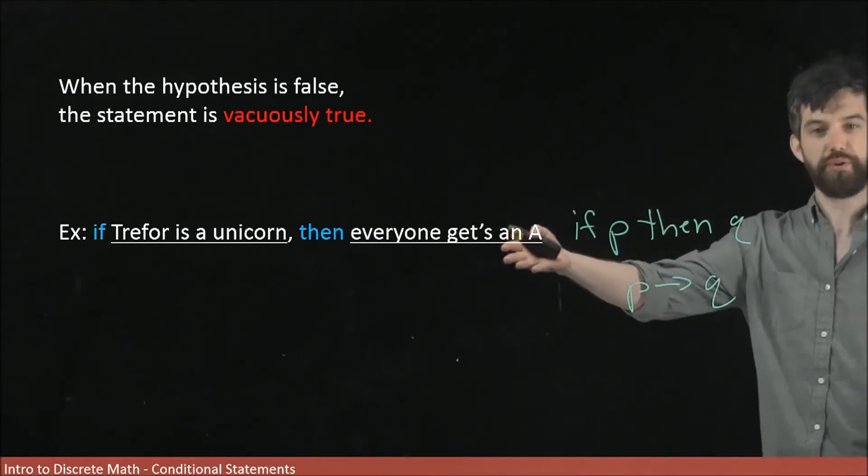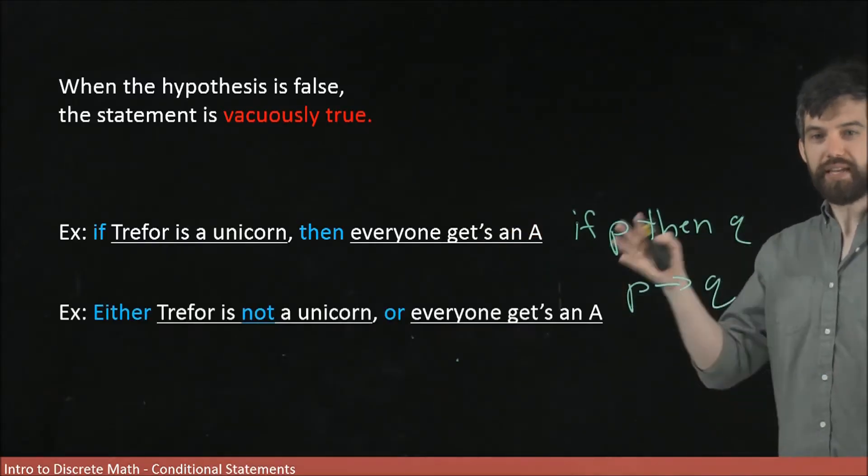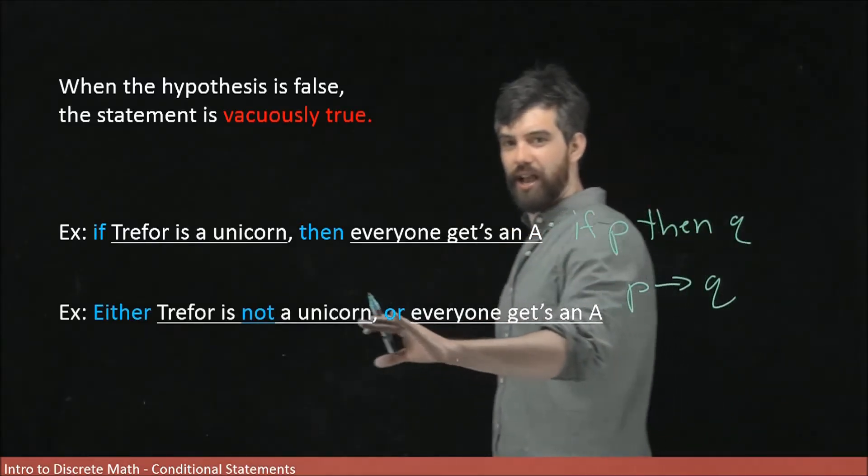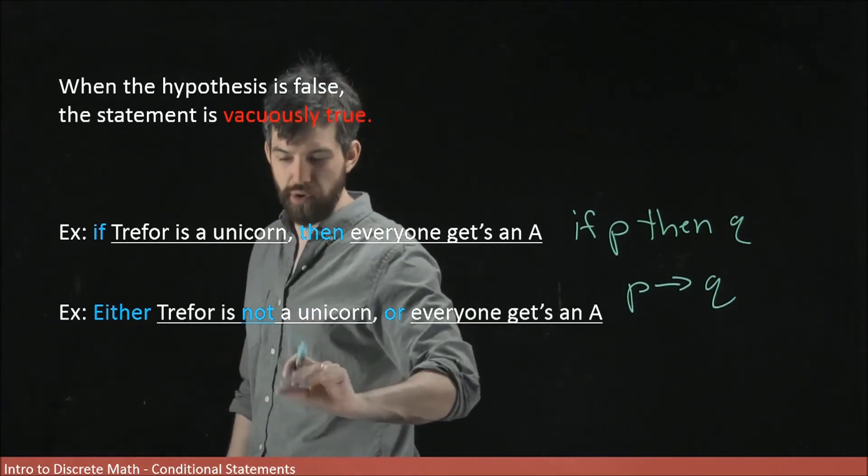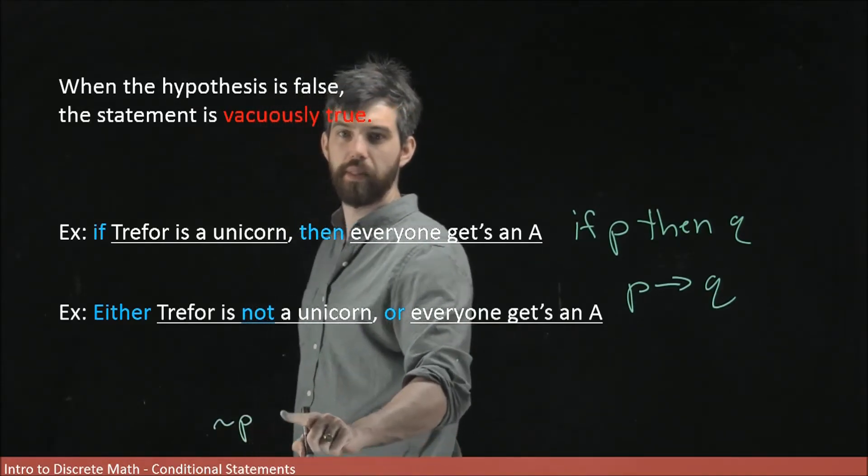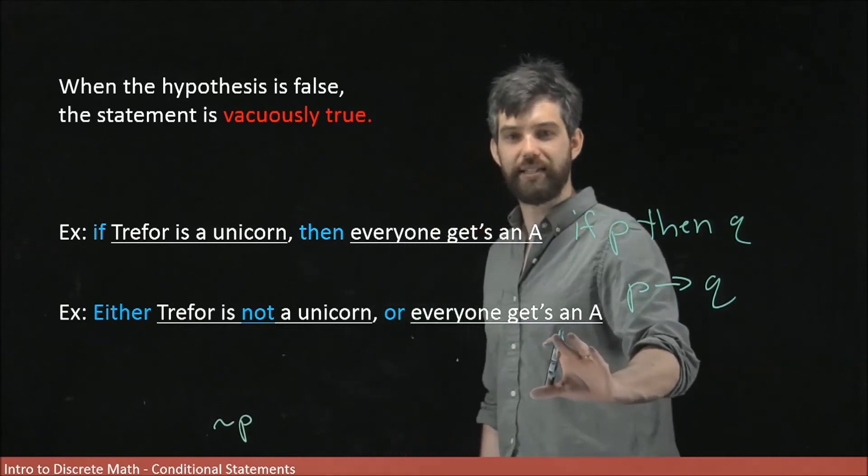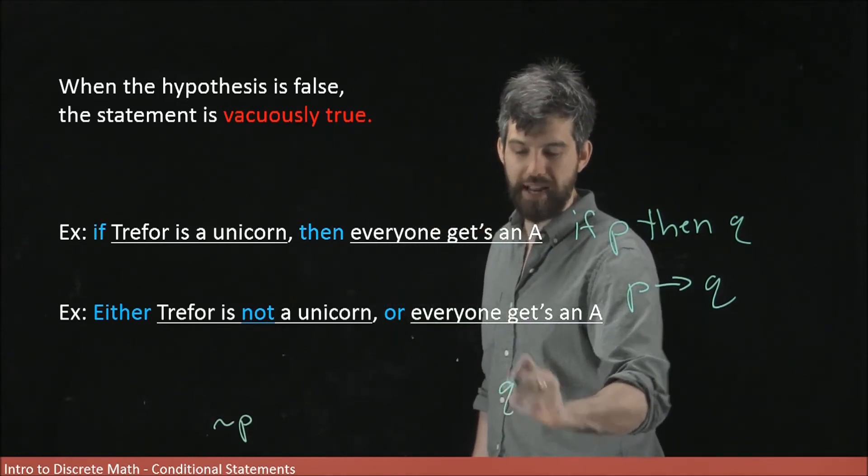Let me try to rewrite this in that form. So in this statement, what I've said is either Trevor is not a unicorn, so this is the statement not P now, or everyone gets an A. That's the same statement I had before, that is again Q.